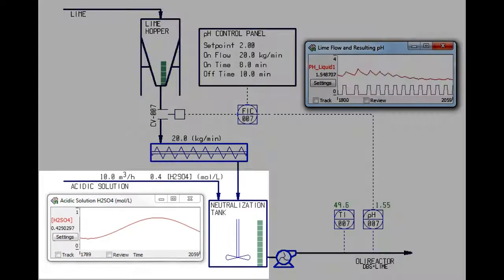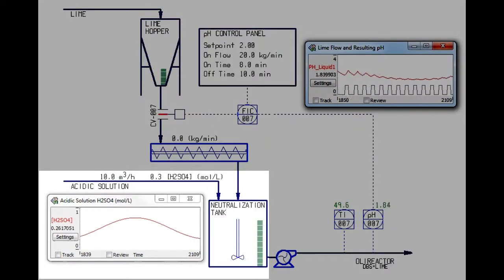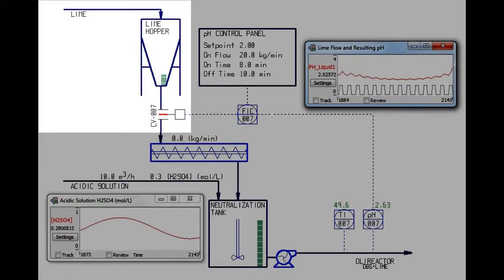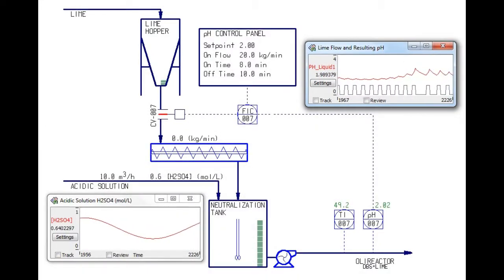Coming in from the left, we have a solution with a varying amount of sulfuric acid being fed into a tank. A hopper is providing lime to neutralize the acid. CADSIM handles the holdup and mixing in the tank while OLI predicts the pH coming from the resulting mixture.